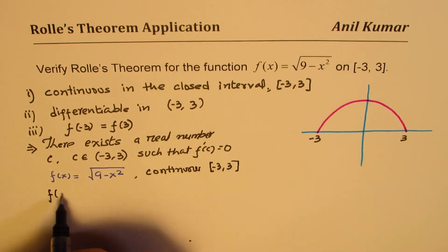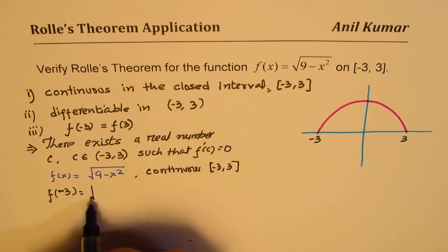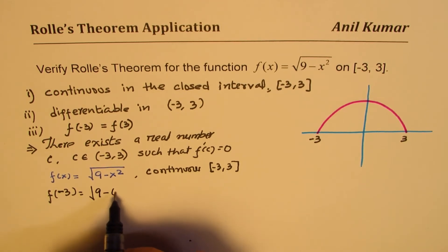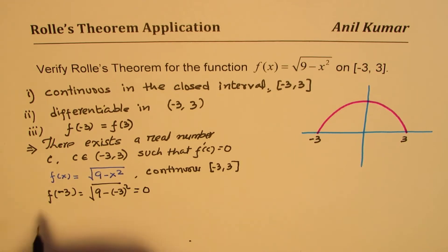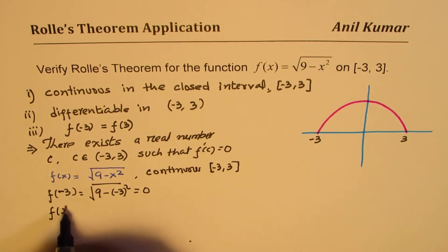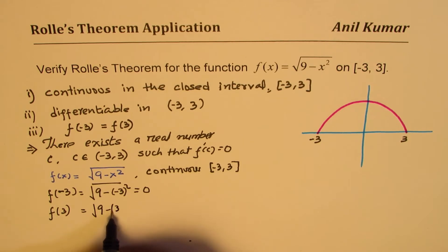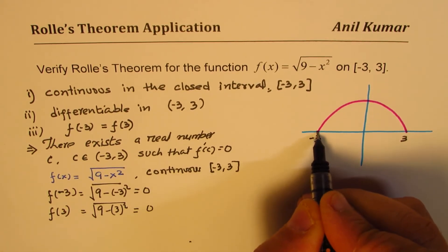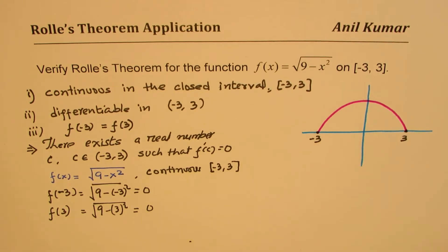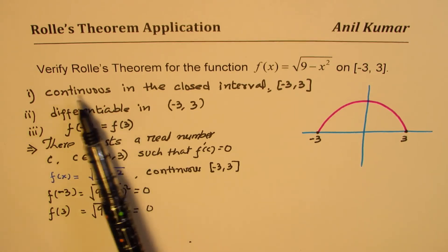The value of the function at -3: if I substitute -3, I get √(9 - (-3)²) = √0 = 0. The value of the function at 3 is also 0, since 9 - 3² = 0. So those are the two zeros at the endpoints, and we have shown that the function is continuous.